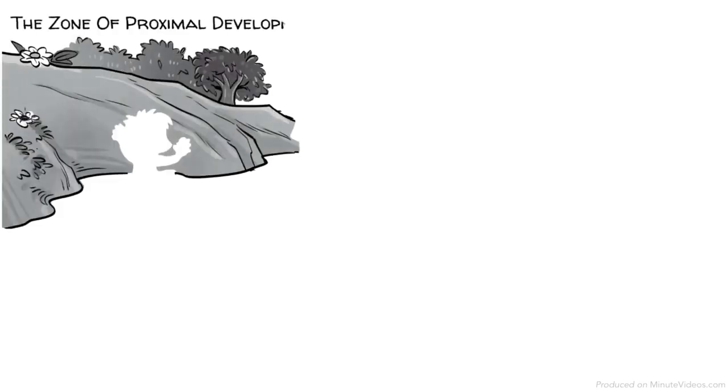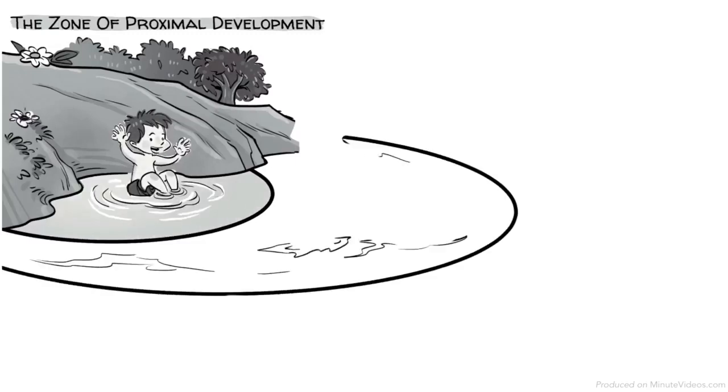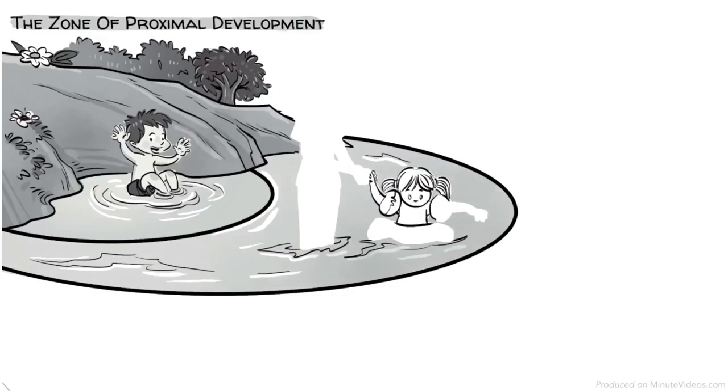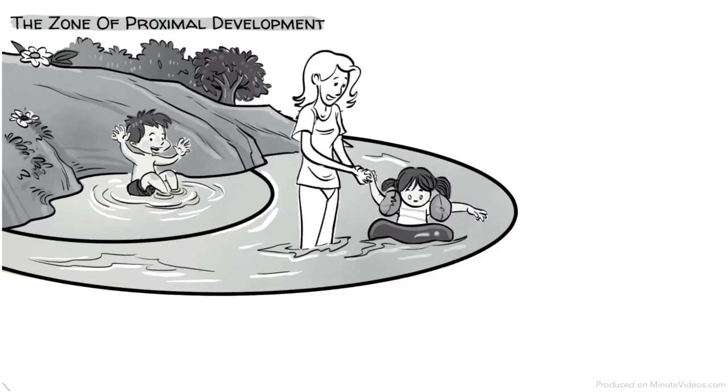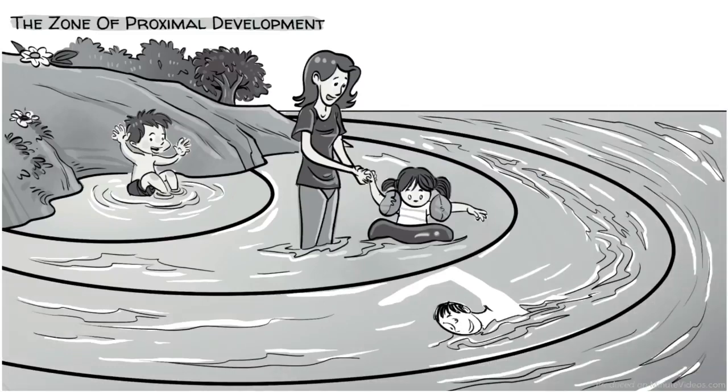This development ideally happens in the zone of proximal development. First, there is what we can do on our own. Then, there is the zone of proximal development, which represents what we can do with the help of an adult, a friend, technology, or what Vygotsky called the more knowledgeable other. Last, there is what's beyond our reach.